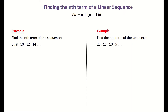Throughout this video we're looking at how to find the nth term of a linear sequence. The nth term stands for any term in a sequence. Looking at the example on the left, the six is the first term, the eight is the second term (t2), then t3, t4, t5, and term n stands for some random term in that infinite list. A linear sequence is a sequence that goes up in a common first difference.